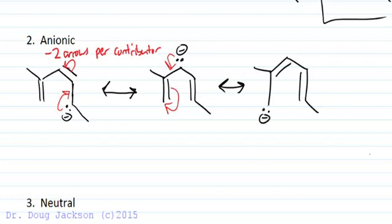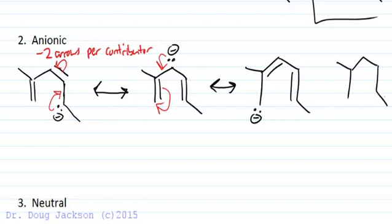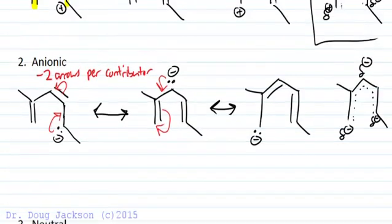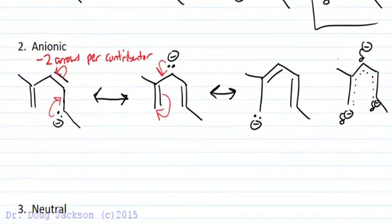Now we're ready for the hybrid again. That hybrid structure has a partial double bond anywhere a double bond exists in a contributor, and partial negative anywhere there was a partial negative or a full negative charge in any one contributor. So the hybrid looks like this.